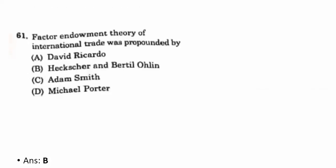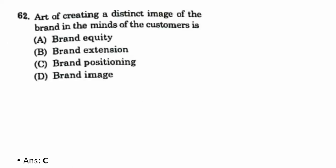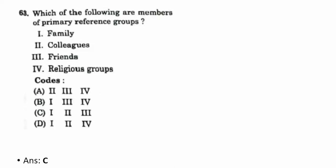Sixty-first question: the factor endowment theory of international trade was propounded by B — Heckscher and Bertil Ohlin. Sixty-second question: the art of creating a distinct image of a brand in the minds of customers is called brand positioning. Sixty-third question: which are members of the primary reference group? C — one, two, and three: family, colleagues, and friends.